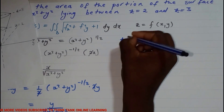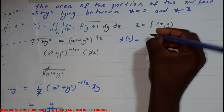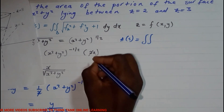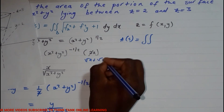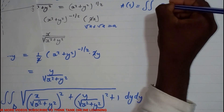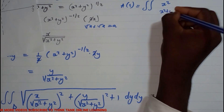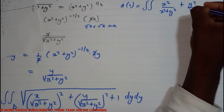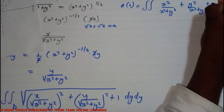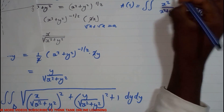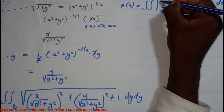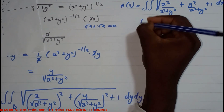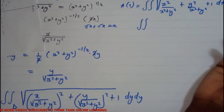We still have the square root. When we square something under a square root, √a × √a = a. So we get x² / (x² + y²) plus y² / (x² + y²), plus 1, all under a square root, times dA.